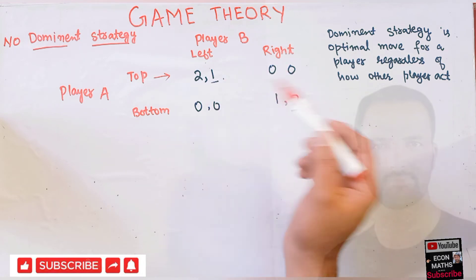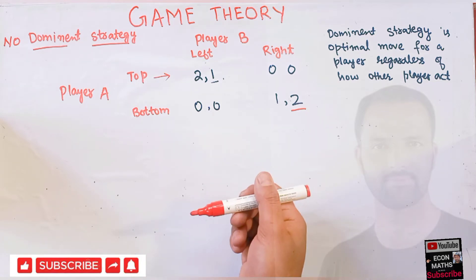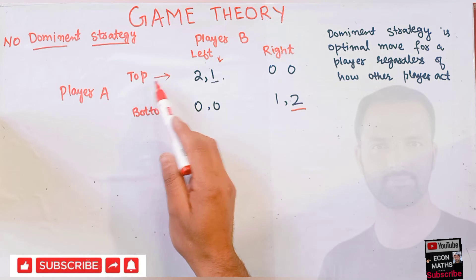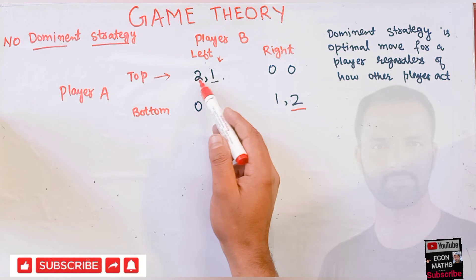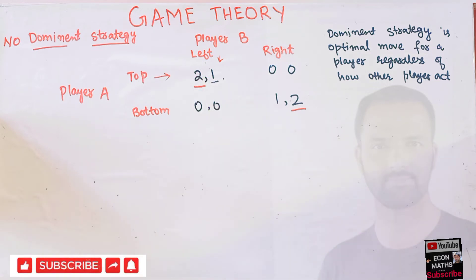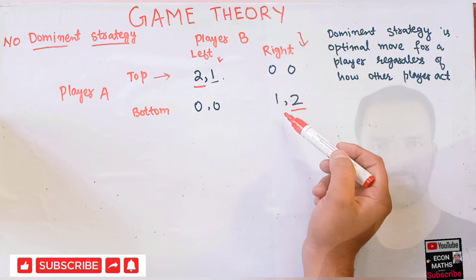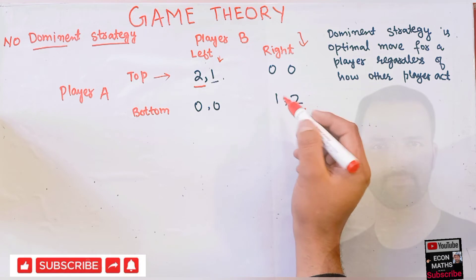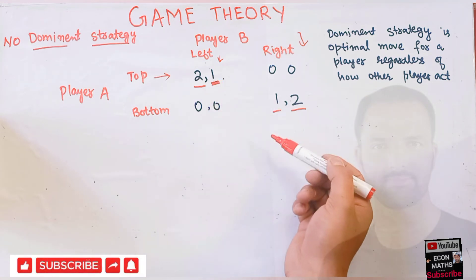Here we can see player B changes his strategy as player A changes his strategy. Player B does not stick to one strategy; he sees what strategy player A makes and subsequently changes his strategy. Similarly, if player B chooses left, player A has two options: top or bottom. If player A goes for top he has two as payoff; if he goes bottom he has only zero, so player A will choose top. If player B chooses right, player A can go either top or bottom, and bottom gives him more payoff.